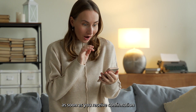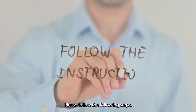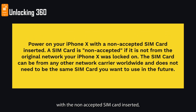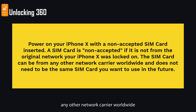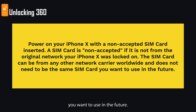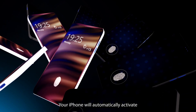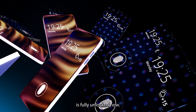As soon as you receive confirmation that the unlock has been applied to your iPhone, follow these steps. Step 1: Power on your iPhone with a non-accepted SIM card inserted. A SIM card is non-accepted if it is not from the original network your iPhone was locked on — it can be from any other network carrier worldwide. Step 2: Your iPhone will automatically activate with your new SIM card, meaning your iPhone is fully unlocked.